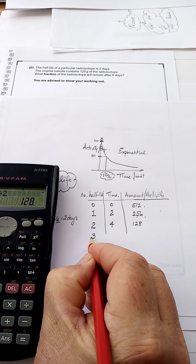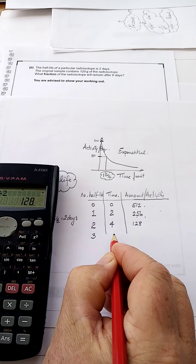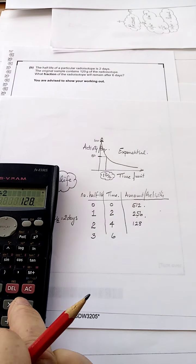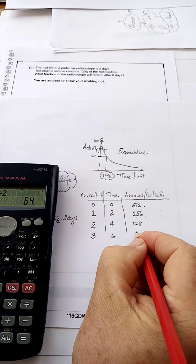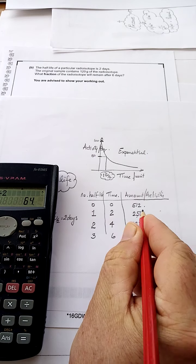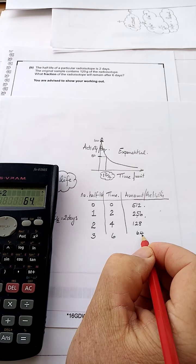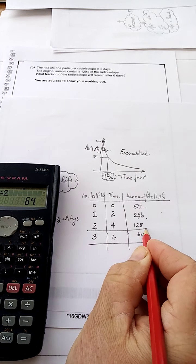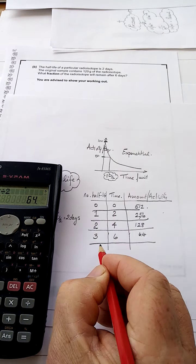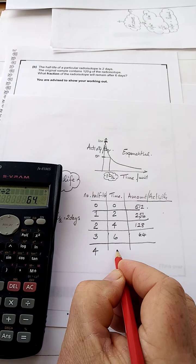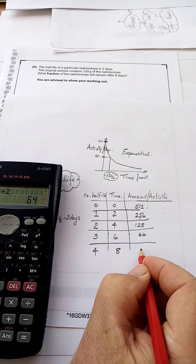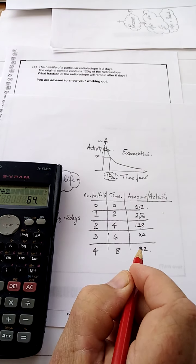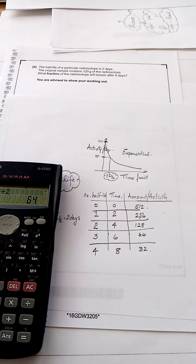So there's 128 radioactive nuclei left. So after three half-lives, that'll be six days, divide that by 2 again, there'll be 64. The activity will be 64 or there'll be the equivalent of 64 nuclei left. And you can continue on down here, like four half-lives, which is eight days, would be 32. And you do this table, this table helps you work things out.